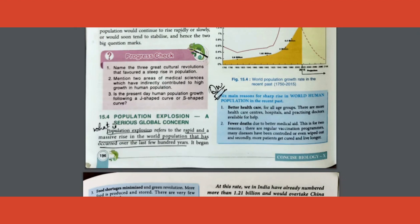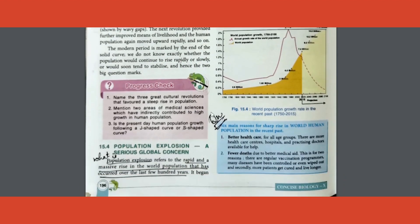Going ahead, the definition of population explosion is here: rapid and massive rise in world population that has happened over hundreds of years. Please write that down. One more question, very important question coming up: main reasons for world population to rise sharply.